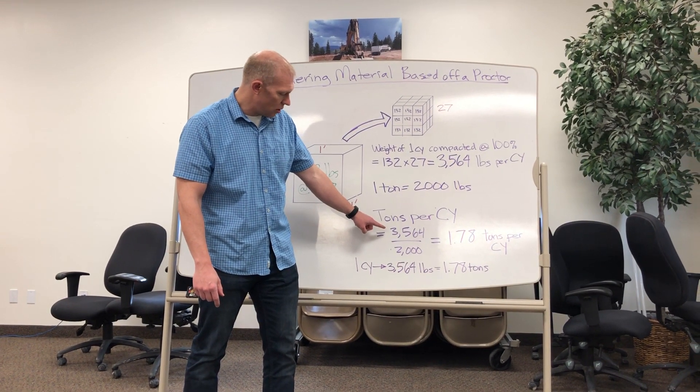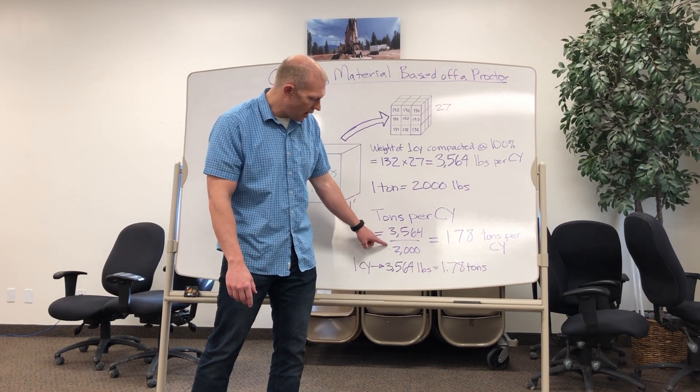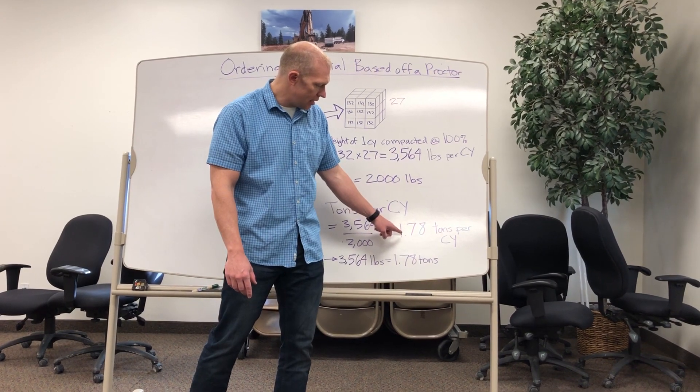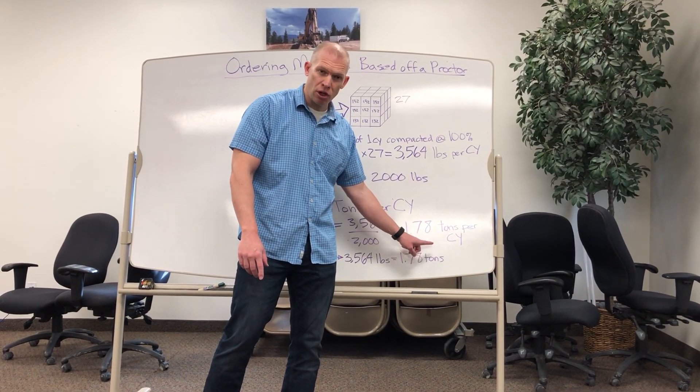If we take this material at 3,564 pounds divided by 2,000, we now know that this material is 1.78 tons per cubic yard.